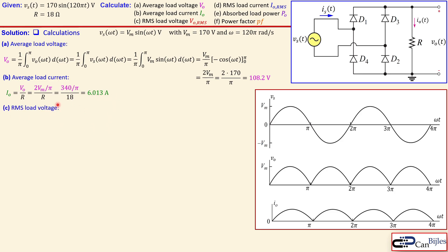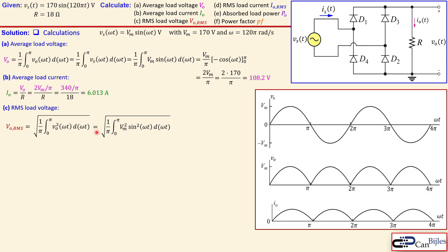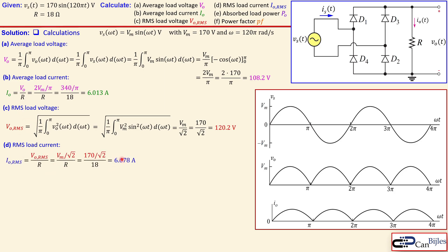The RMS load voltage is calculated using the definition for RMS value, integrating over the period pi from 0 to pi. Since Vo equals Vs, we replace Vo by the source expression and square it. This is the familiar RMS calculation for a pure sine wave, giving Vm over the square root of 2, which is 170 / √2 ≈ 120.2 V. The RMS load current is then 120.2 / 18 ≈ 6.678 A.